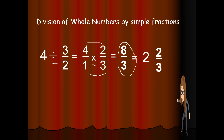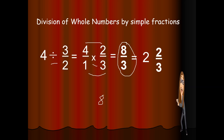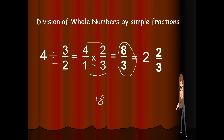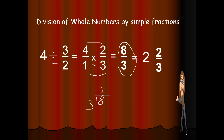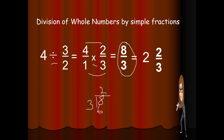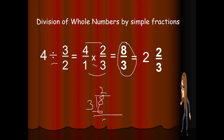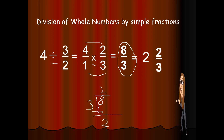I will show you how we arrived at this answer. 8 divided by 3: we get 2. 2 times 3 is 6. 8 minus 6 is 2. So the answer is 2 and 2 thirds.